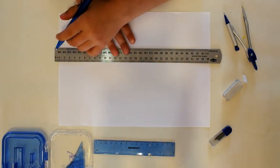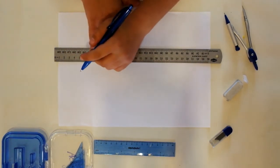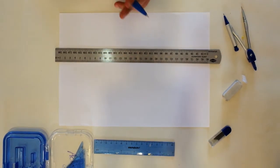All right. Do you want to tell us what you're doing today? I'm making an 8-pointed star.